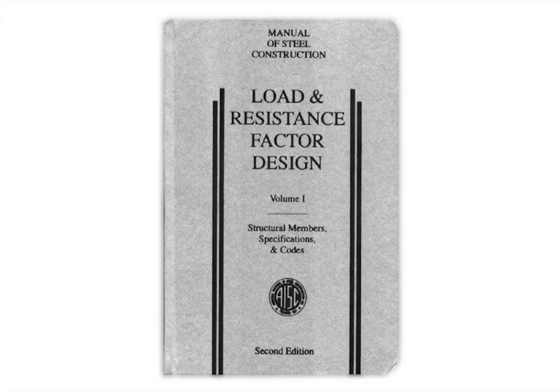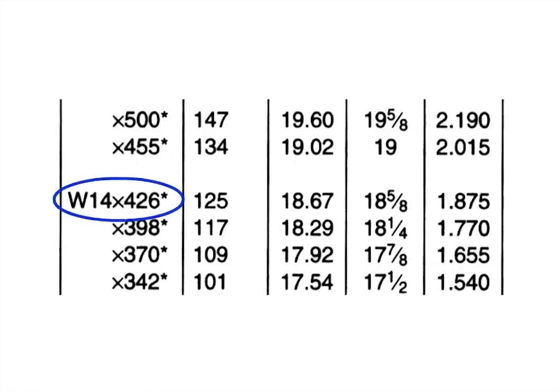The nominal depth is usually within one-half inch of the actual depth, but there are some exceptions. W14 by 426 has an actual depth of 18.67 inches. The steel detailer must keep this in mind when detailing a project.